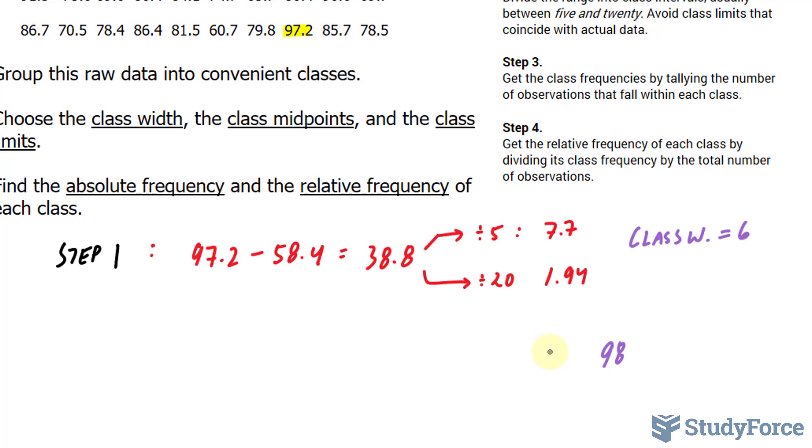6 less than that is 92. Subtract by 6, we get 86, 80, 74, 68, 62, and 56. These will serve as my class limits.